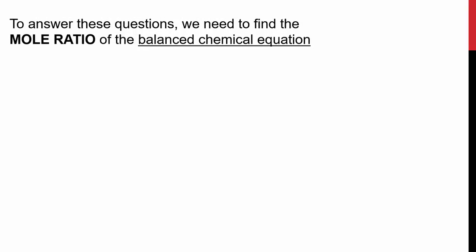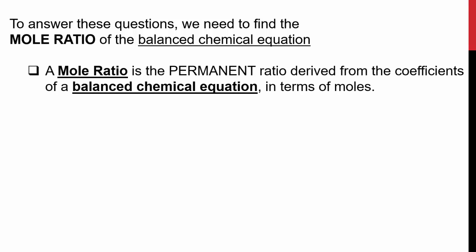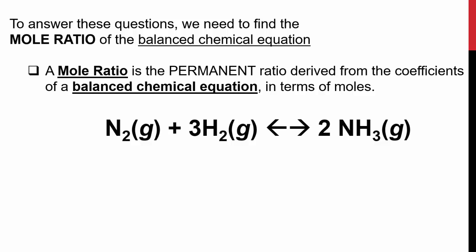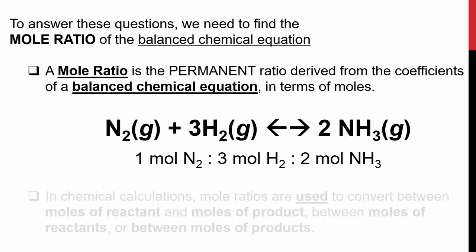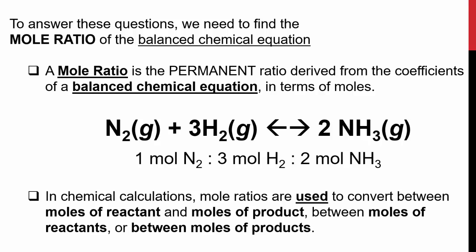To answer these questions, we need to find something called a mole ratio of the balanced chemical equations. A mole ratio is the permanent ratio derived from the coefficients of a balanced chemical equation in terms of moles. We have 1 mole of nitrogen gas, 3 moles of hydrogen gas, 2 moles of ammonia gas when we balance this equation out, which means we have a mole ratio of 1 mole to 3 moles to 2 moles. Mole ratios are used to convert between the moles of the reactants and the moles of products, between the moles of just the reactants, or between just the moles of the products.